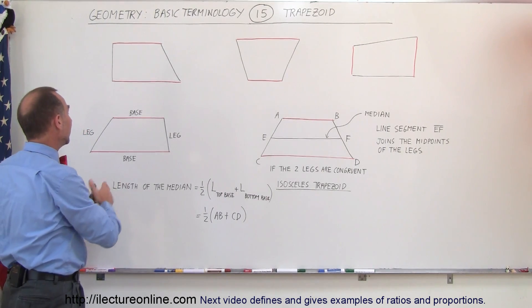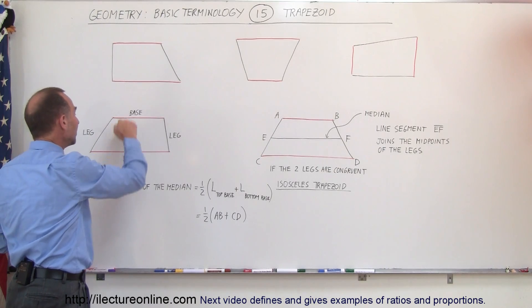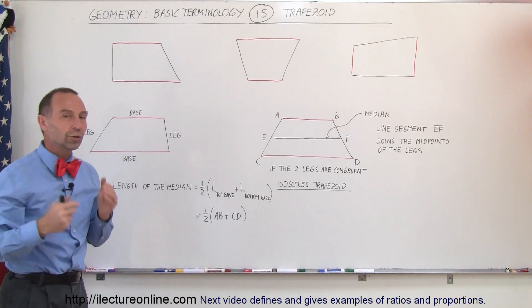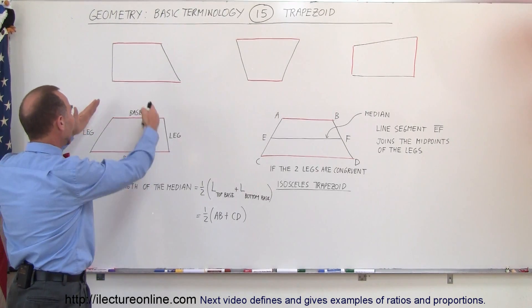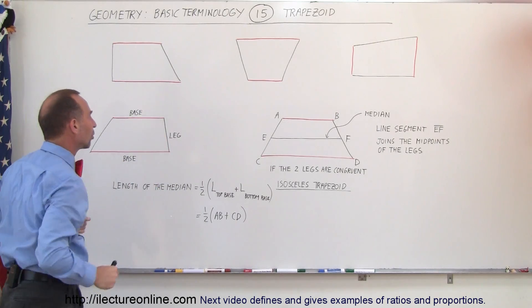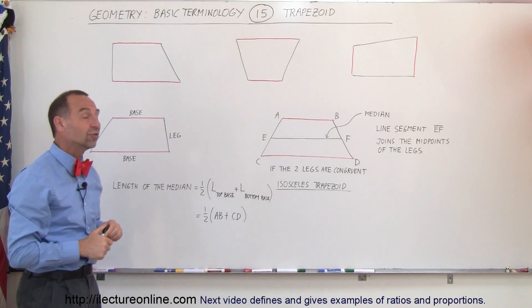Typically, when the trapezoid is situated with the parallel sides on top and bottom, those sides are called the bases. The two non-parallel sides on the left and right are called the legs.